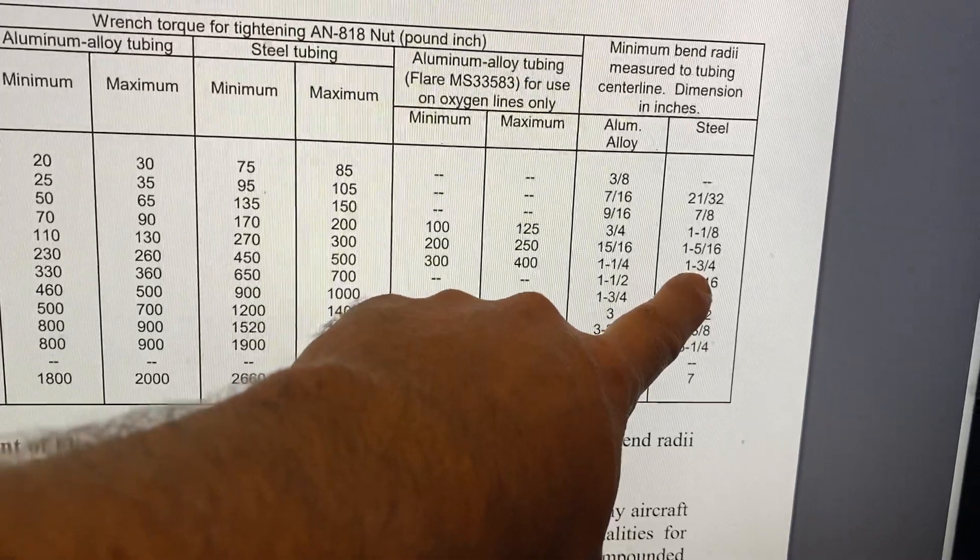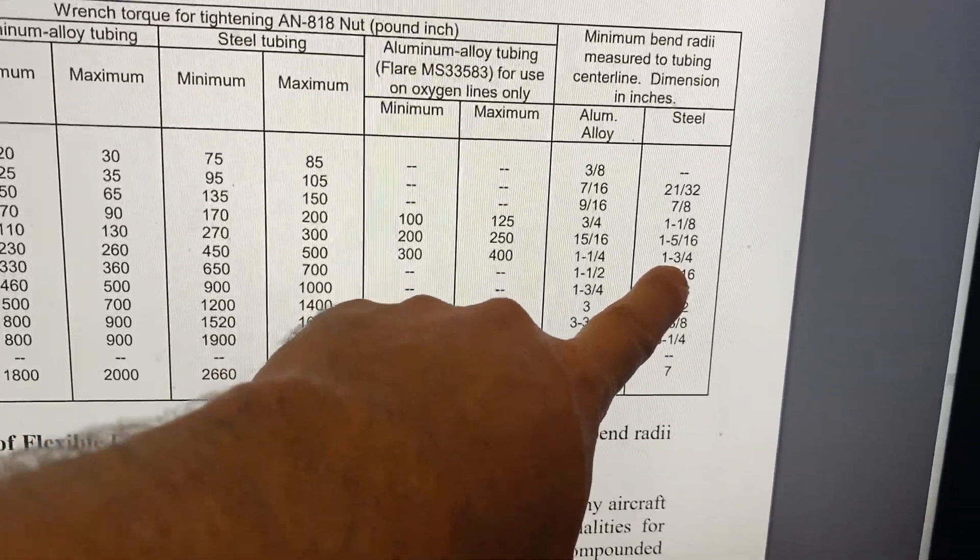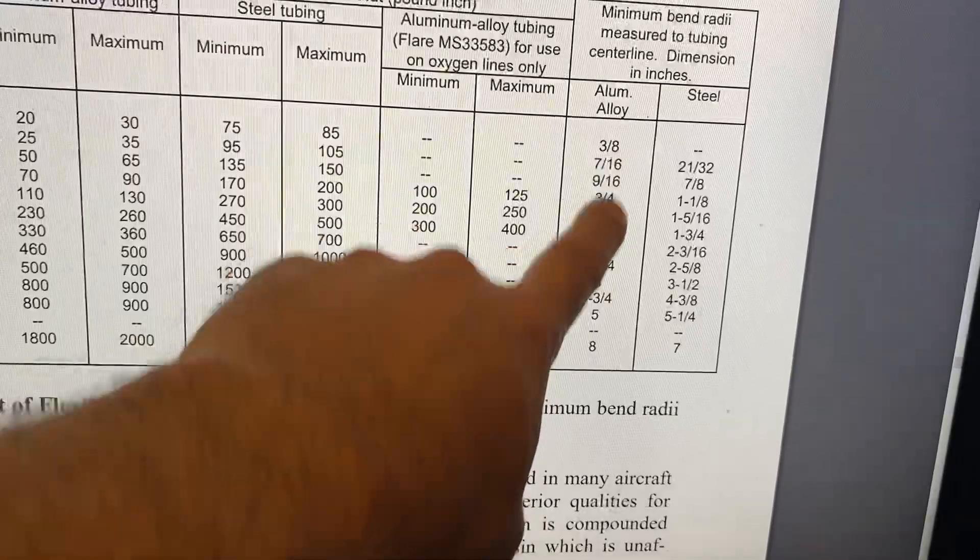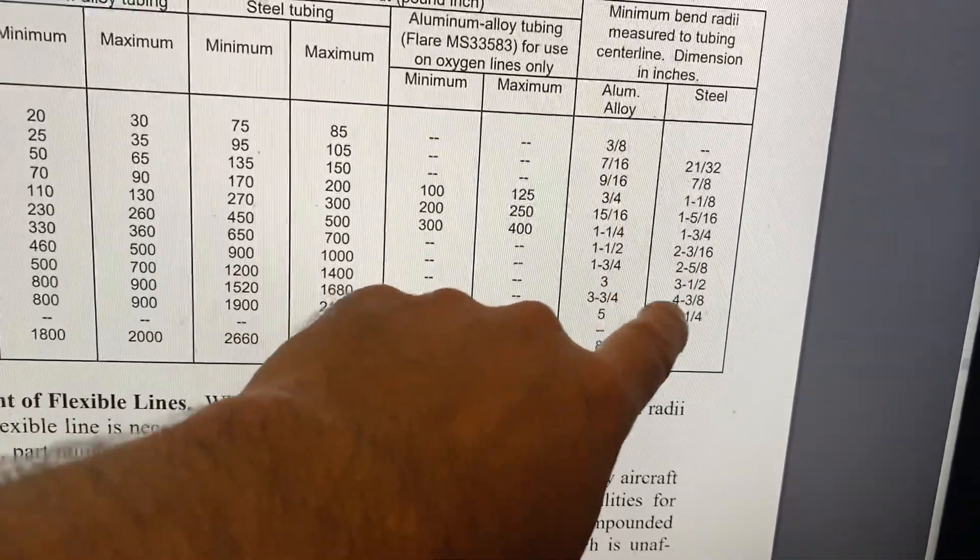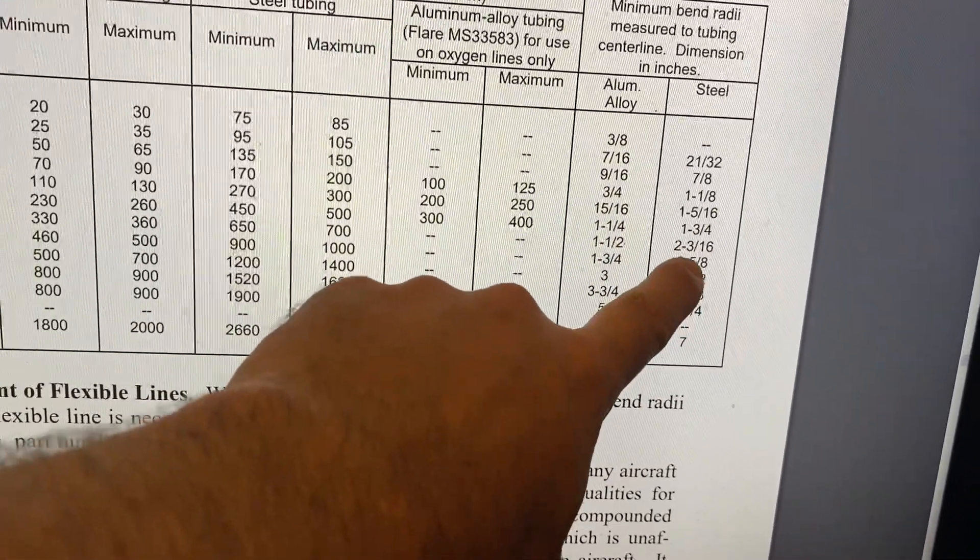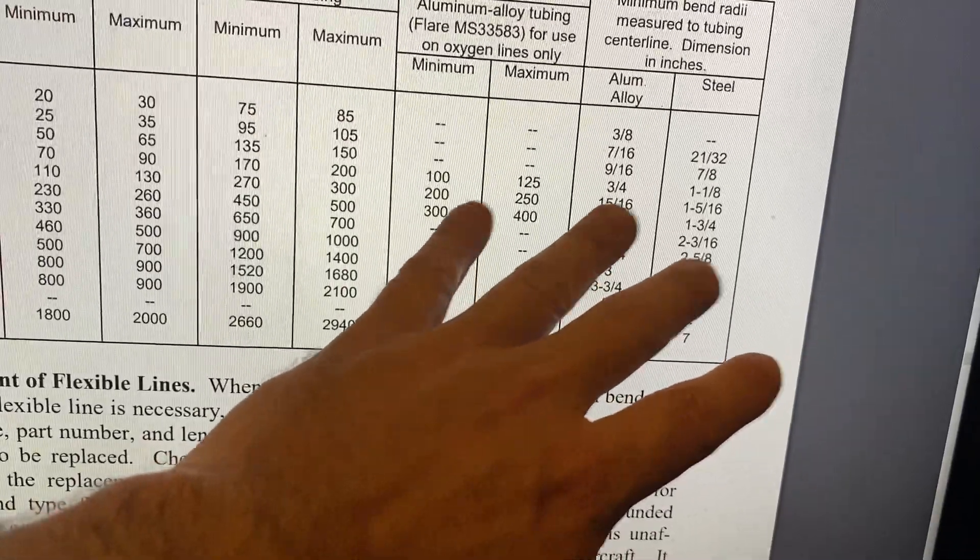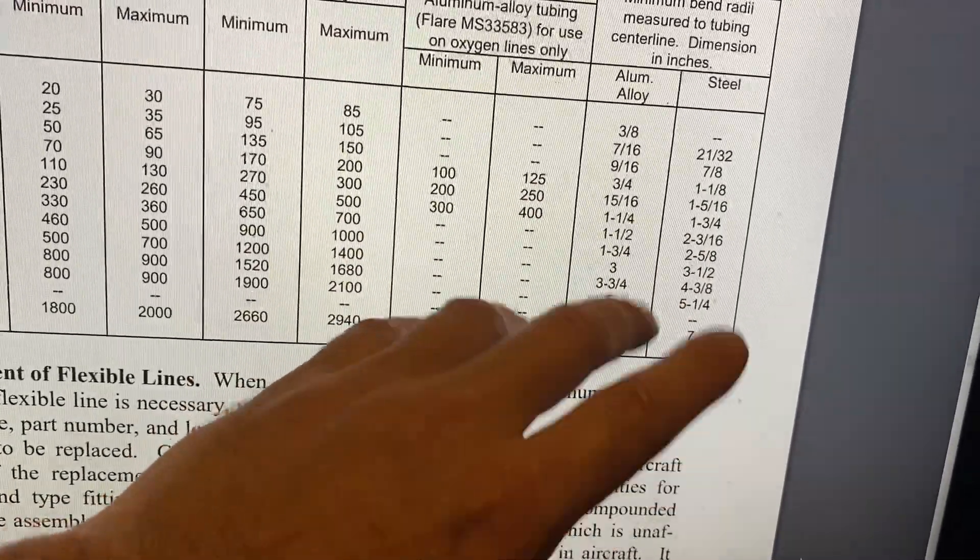If you notice, this column is always higher than this column. There's an FAA test question about that. And the reason why is because the steel is stronger and harder and it's more apt to damage when it's being bent at a sharper rate.